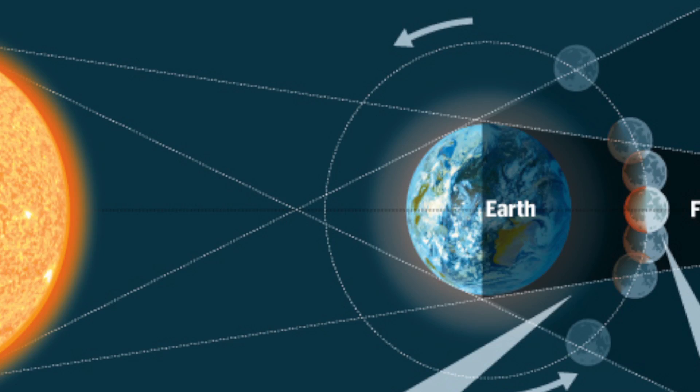They say that you shouldn't be able to see a full moon in the daytime — that's hogwash. If the Sun is just about to go down on the horizon on one side and the moon has just come up, you could clearly see a full moon. A full moon lasts more than just one day — it's three or four days, a whole period of full mooning going on.